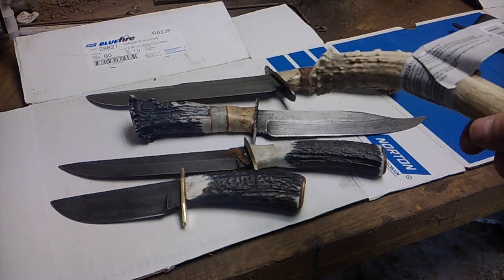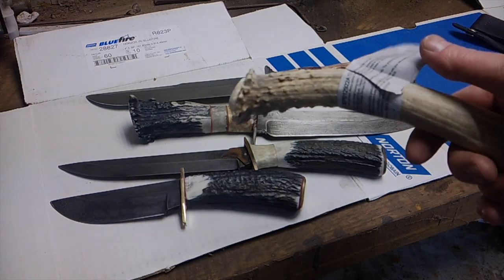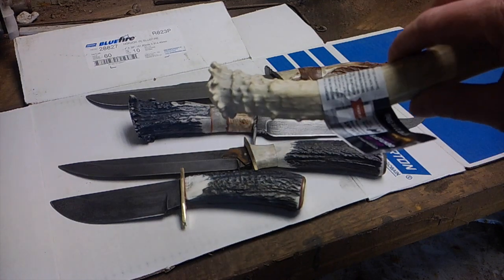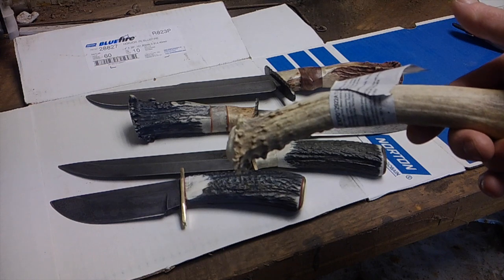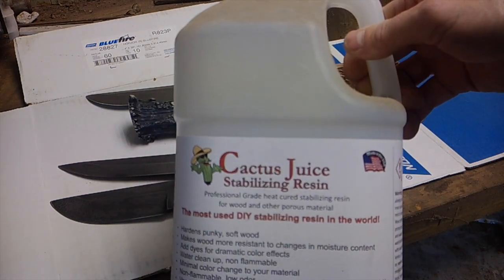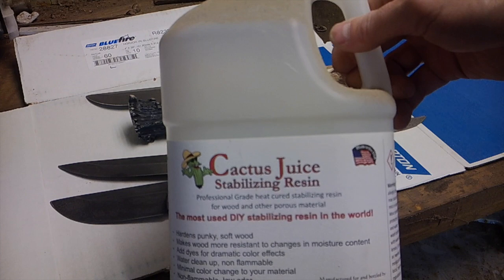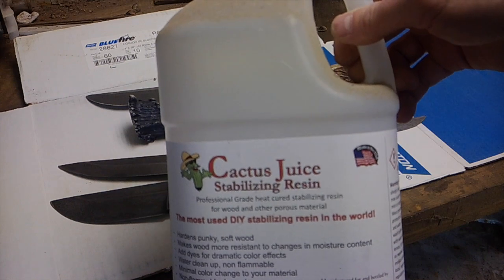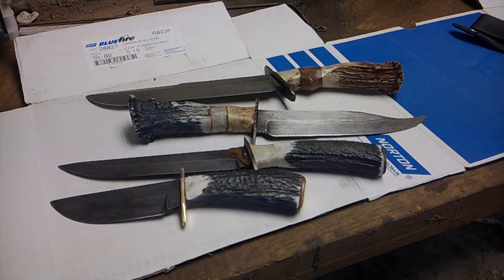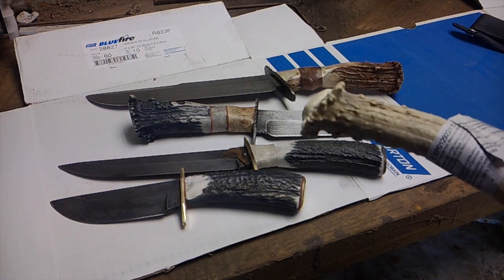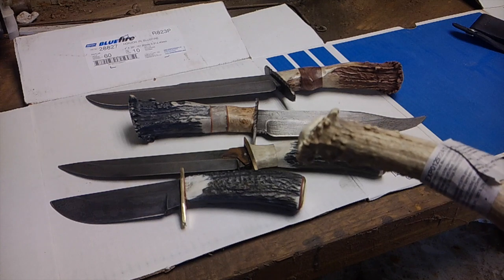I'm going to go through the process of how I add color to these and make them give them another dimension if you will. The process involves stabilizing which, if you're not familiar with this, cactus juice is sold for wood and other porous materials. Well antler is porous material and it happens to take the stabilization process very well. So I'm gonna walk you through the process of how to add color to these and give them some dimension and of course that's going to add value to your project.